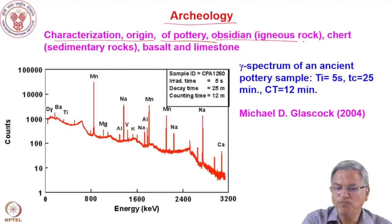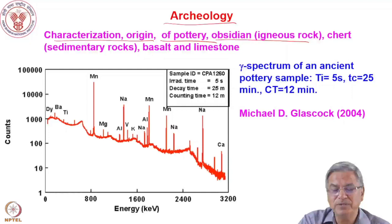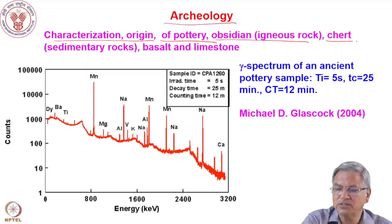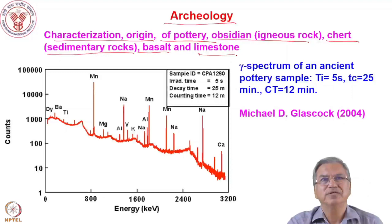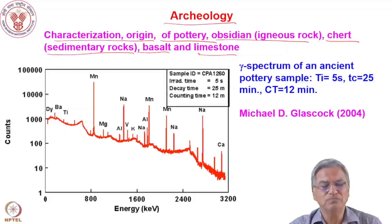Obsidian-type igneous rocks can help understand volcanic eruptions and what kinds of rocks were generated. Sedimentary rocks and the sedimentation process over time, as well as basalt, limestone, and clay samples — different geological and archaeological samples can be analyzed as research and development work to characterize and establish the origins of these artifacts.